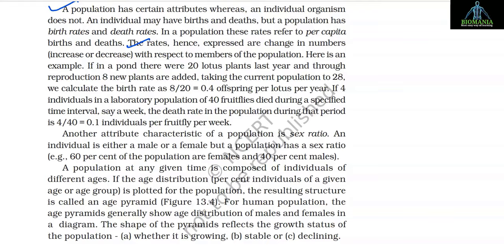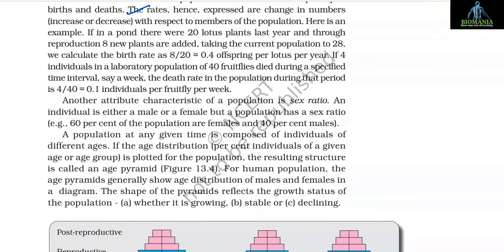Here is an example: if in a pond there were 20 lotus plants last year and through reproduction 8 new plants were added, taking the population to 28, we calculate the birth rate as 8/20 = 0.4 offspring per lotus per year. If 4 individuals in a laboratory population of 40 fruit flies die during a specified time interval — say a week — the death rate is 4/40 = 0.1 individuals per fruit fly per week.